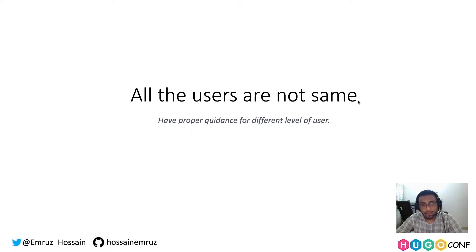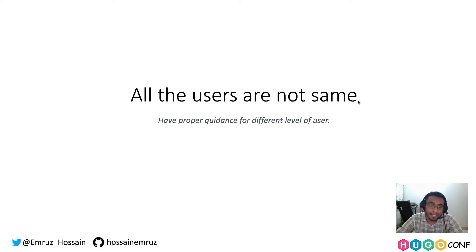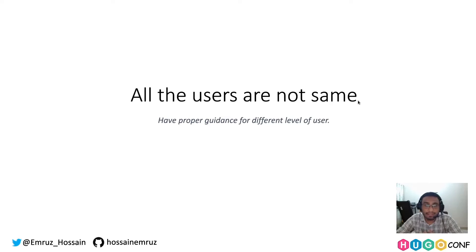We should not assume that all users will be at a similar level. Some of your users will be new to Hugo and don't have a proper understanding of how it works. You should have a pre-configured example site that they can fork and get started quickly — this will hugely reduce the number of issues they face. You will also see users who are already familiar with Hugo and want to transition to your theme. You should have a proper guideline for these users explaining what they should be careful about during this transition.